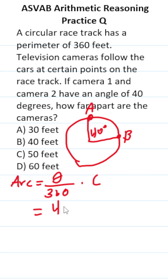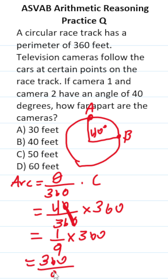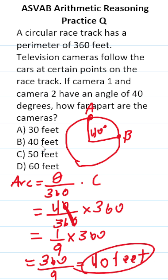We have all these things. They have a central angle of 40 degrees, so we'll place that over 360. The circumference of our circle is 360. Let's go ahead and reduce this — cross out the corresponding zeros. 4 over 36 reduces to 1 ninth, times 360. This becomes 360 over 9. 36 divided by 9 is 4, so just tack on that zero — these two cameras are 40 feet apart on this track.